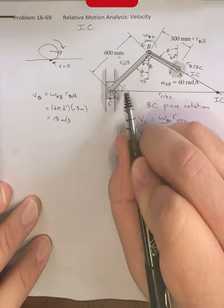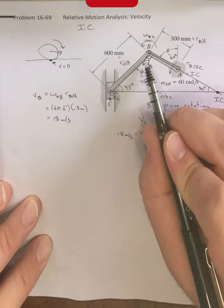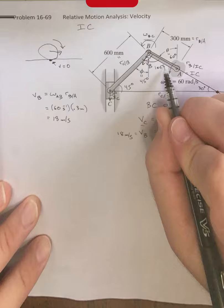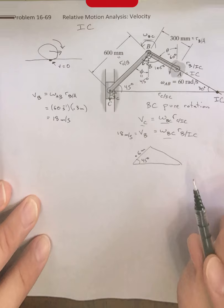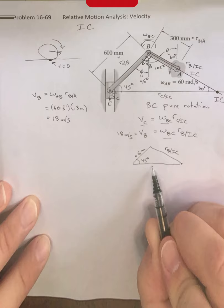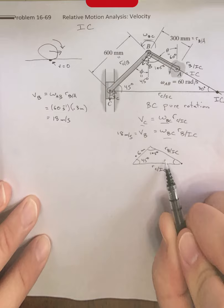And then the entire angle between the IC, B, and C is going to be 105 degrees. If we give a quick sketch of that new triangle, we have 0.6 meters here, we have this being 45 degrees, we have this being our B/IC, this is our C/IC, this is 105 degrees, and this is 30 degrees.